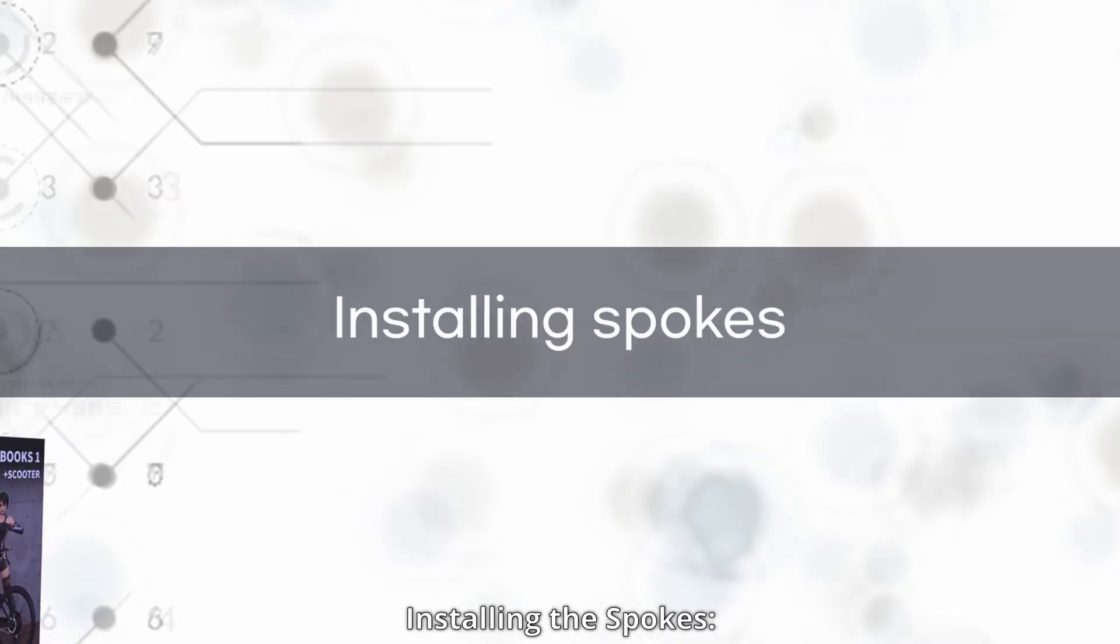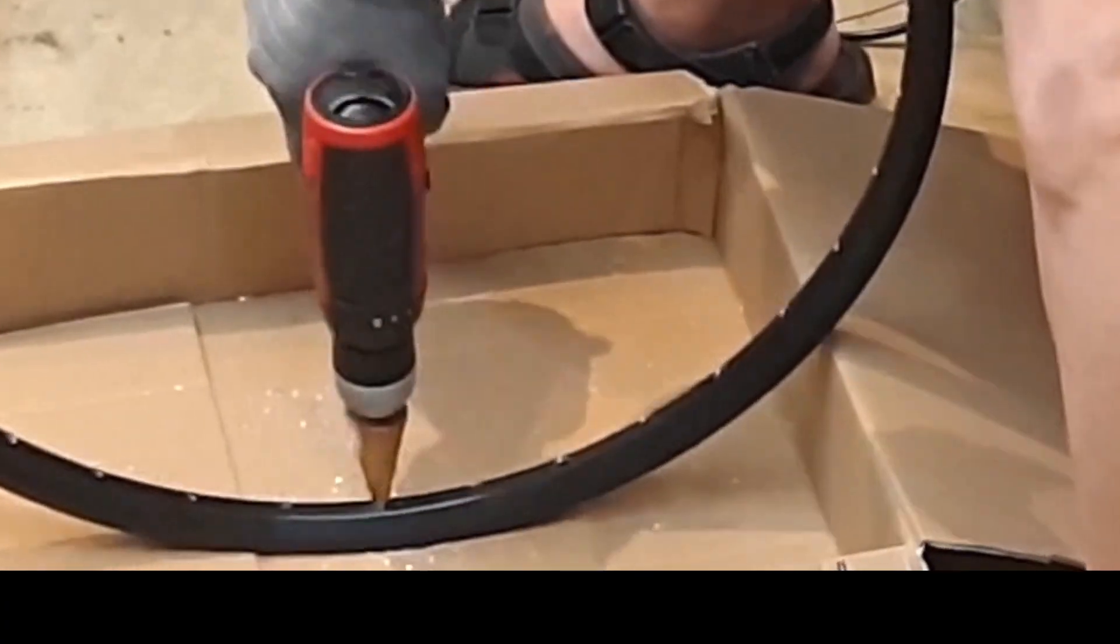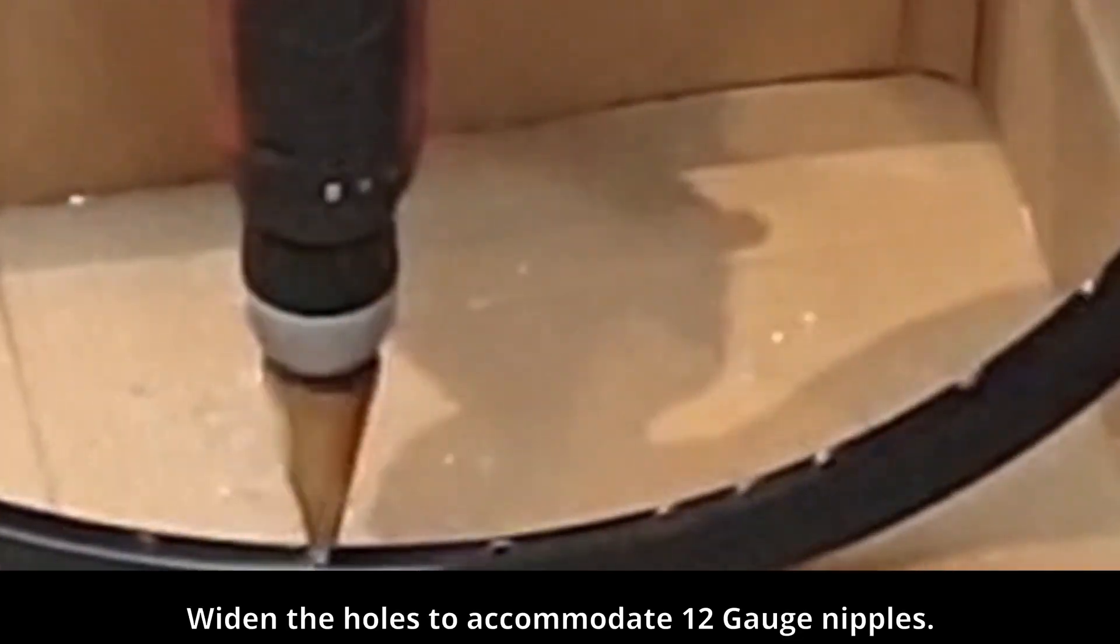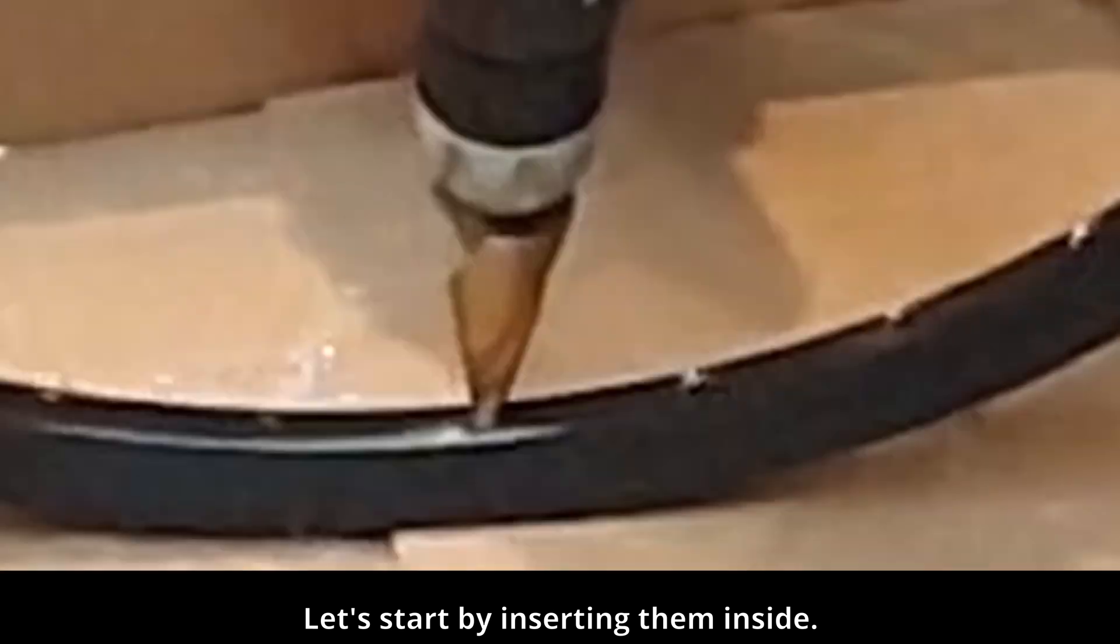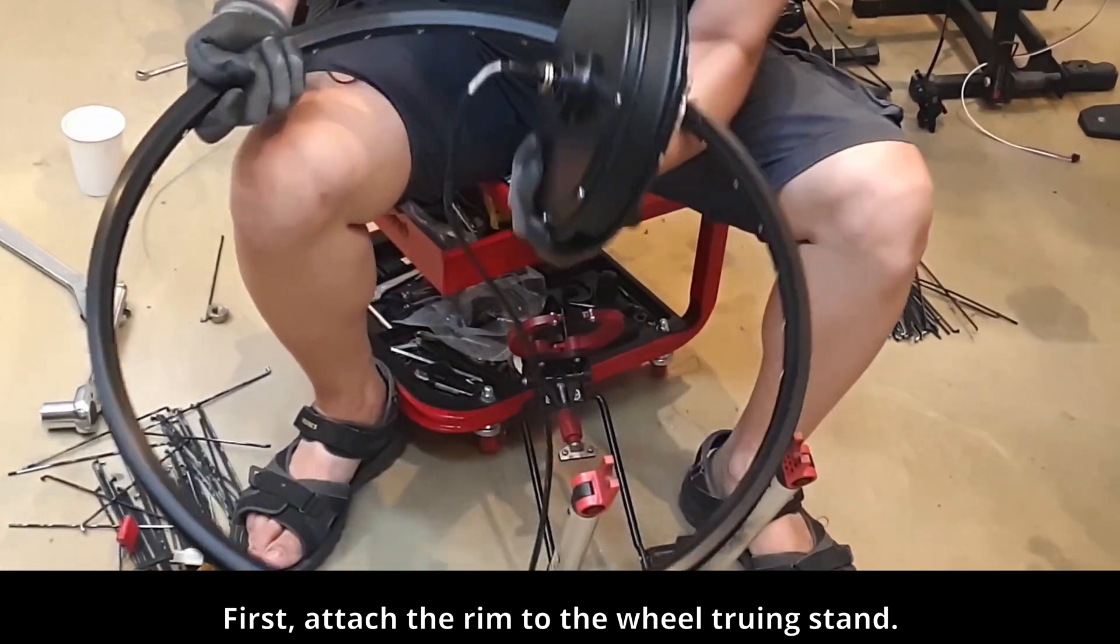Installing the spokes. Widen the holes to accommodate 12 gauge nipples. Let's start by inserting them inside. First, attach the rim to the wheel truing stand.